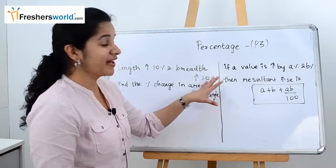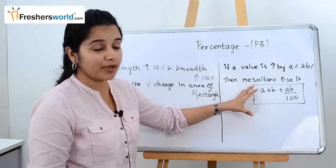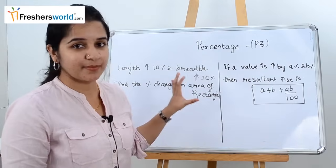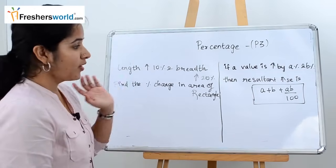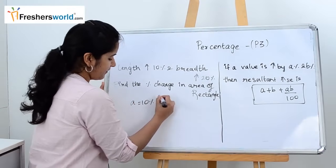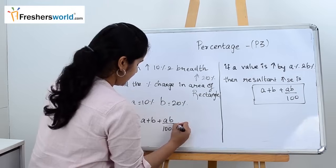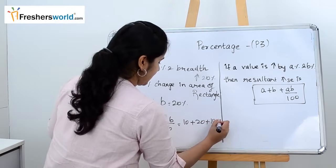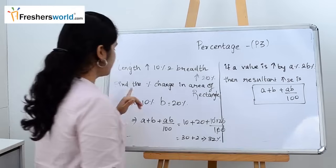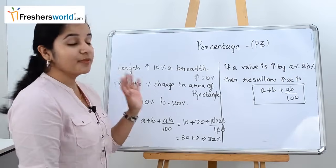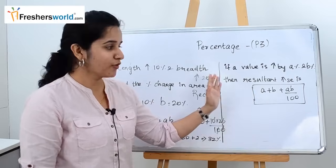Next concept: if a value is increased by A% and B%, the overall resultant percentage change is given by the formula: A + B + AB/100. For example, length is increased by 10% and breadth is increased by 20%. Find the change in area. Substituting: 10 + 20 + (10 × 20)/100 = 30 + 2 = 32%. The percentage change in area is 32%.